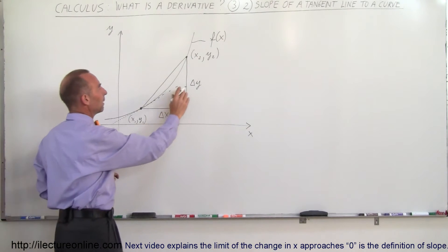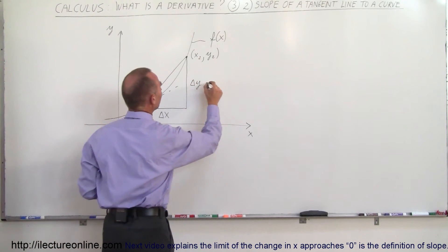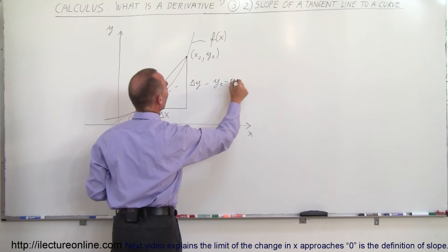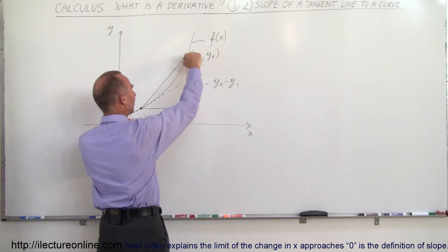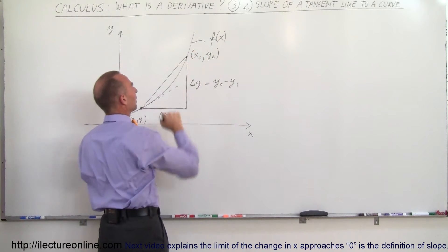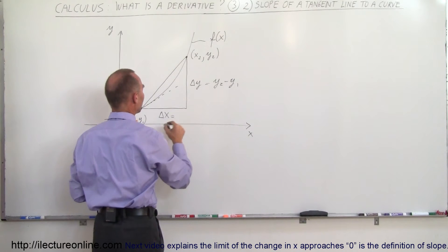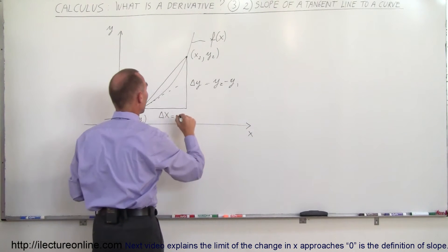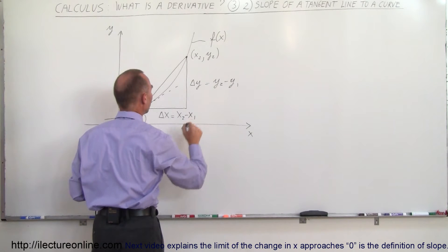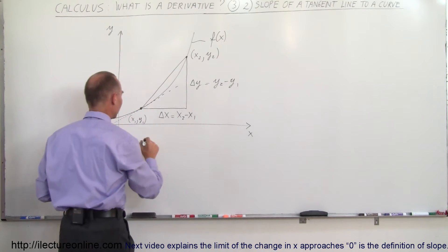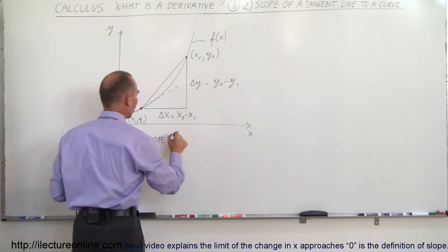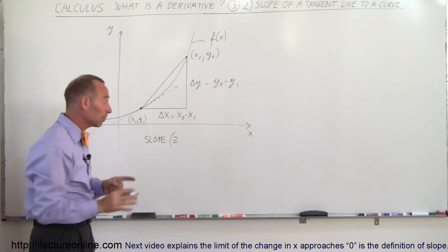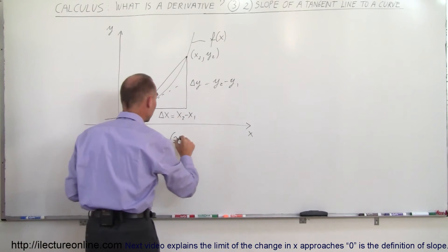So what I do is I say my delta y is equal to y2 minus y1 — simply the difference between the two y's. That would be the height. And my delta x is simply equal to the difference between the two x values: x2 minus x1. So therefore I can say that the slope, which is approximately — not exactly but approximately — the derivative.